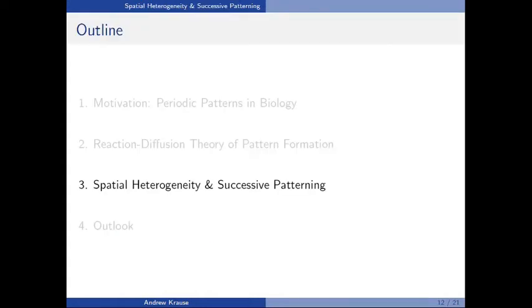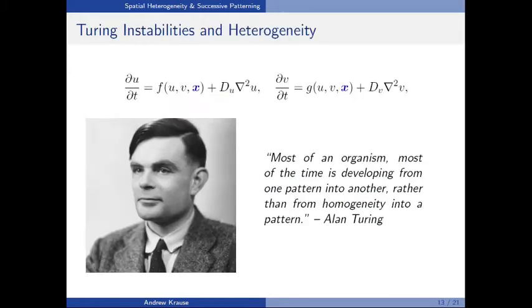Next I'll talk about a quite different case where this sort of classical instability analysis doesn't work. This is the case of spatial heterogeneity. Turing himself kind of knew this in writing his original paper, that it was an idealization to consider a spatially homogeneous equilibrium which spontaneously underwent a symmetry breaking to spatial heterogeneity. Really, most pattern formation is from one kind of pattern state into another.